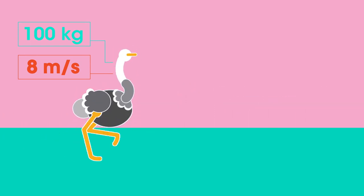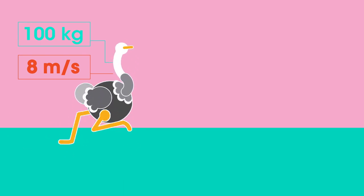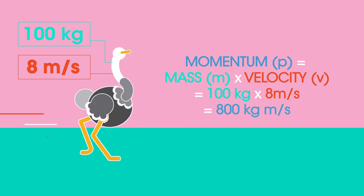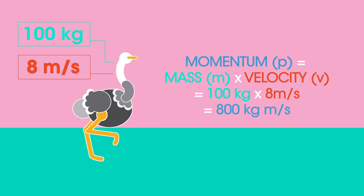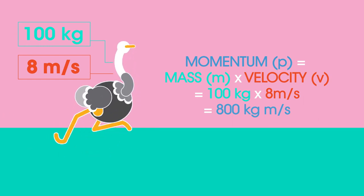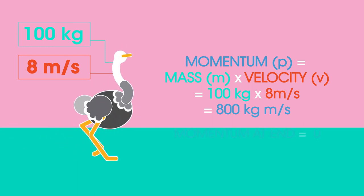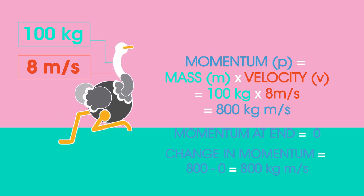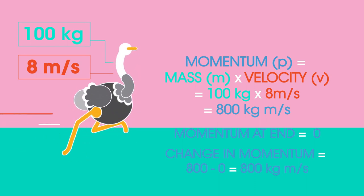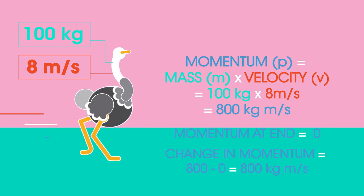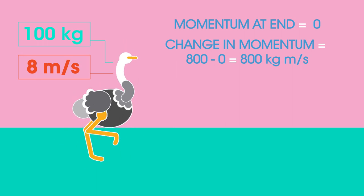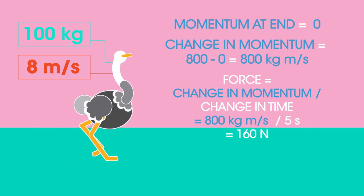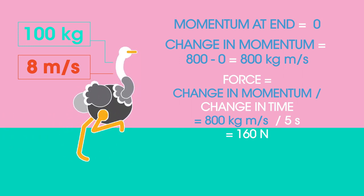First, we need to calculate the change in momentum. Momentum at start equals mass m times velocity V, which equals 100 kilograms times 8 meters per second, which equals 800 kilogram meters per second. Momentum at end equals zero. Change in momentum equals 800 minus zero, which equals 800 kilogram meters per second. Now we substitute these values into our equation: force equals change in momentum over change in time, which equals 800 kilogram meters per second divided by 5 seconds, which equals 160 Newtons.